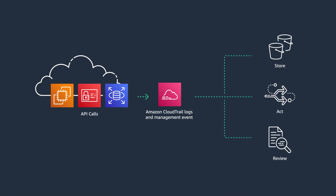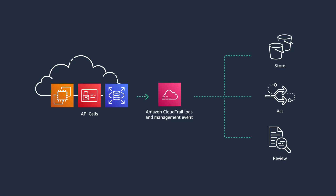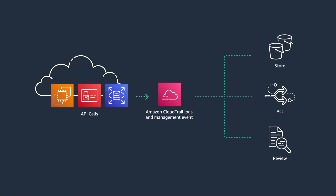CloudTrail is enabled by default for all AWS accounts and provides 90 days of event history in the CloudTrail console. To get a complete record of all events in your environment, I recommend you to create a trail to archive changes and activity. That way, you can store the API events as logs in a secure and immutable format to be used for later analysis for security and compliance purposes.